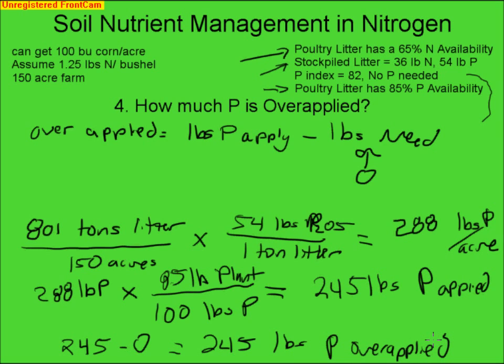We have gone through this calculation to determine how much nitrogen our plant needs. Sometimes when we apply fertilizer in one crop, we end up with excesses — in this case, excess phosphorus to meet our nitrogen recommendation. If we don't meet our nitrogen recommendation, even though we have plenty of phosphorus, our plant can't grow nice quality ears of corn.